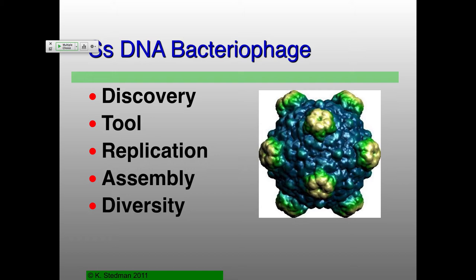We'll talk about now the small DNA bacteriophage — these are also known as the microviruses. Where they came from: people were just looking for lots of viruses that infected E. coli and finding a whole bunch of different ones. These ones happened to be really, really small — and so that's why they're called the microviruses.